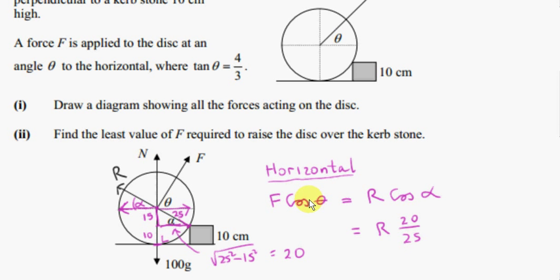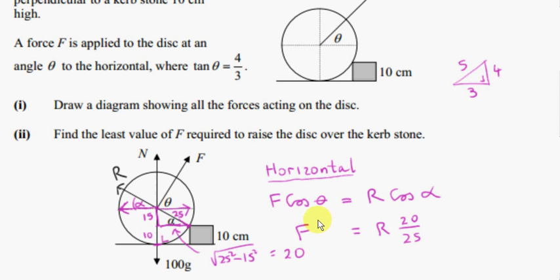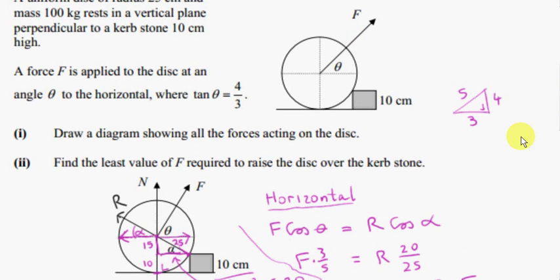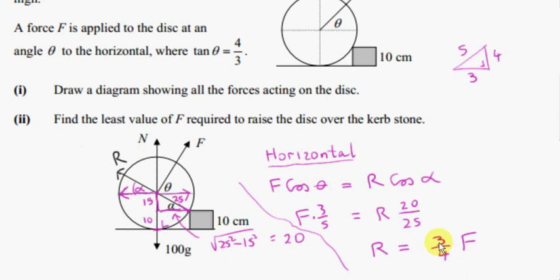Now we want cos of theta. Tan of theta is four-thirds, so opposite over adjacent gives a hypotenuse of 5 by Pythagoras. So cos theta is three-fifths. We have F times three-fifths. We want to get R in terms of F, since F is what we are given in this problem. Solving gives R equals three-quarters F.